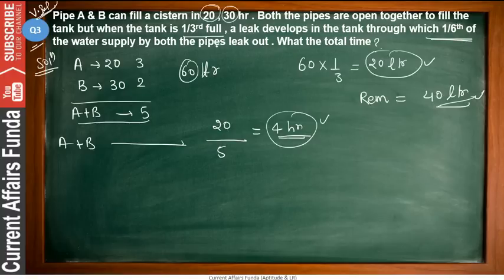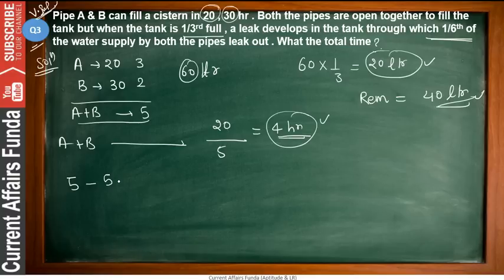With the leak, 1/6 of the water supply from both pipes leaks out. Total supply rate is 5, so the leak is 1/6 of 5. Net effective rate = 5 − 5/6 = 25/6 liters per hour. The remaining water to be filled is 40 liters. Time for remaining = 40 ÷ (25/6) = 40 × 6/25 = 48/5 = 9.6 hours.